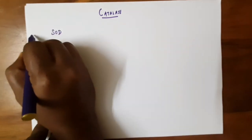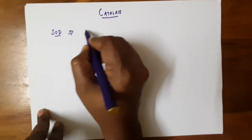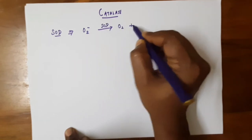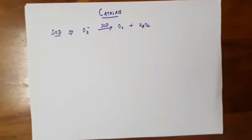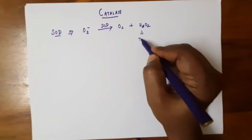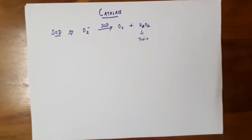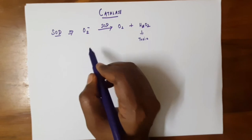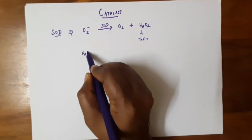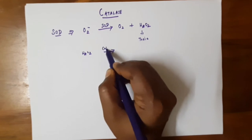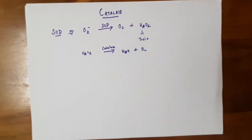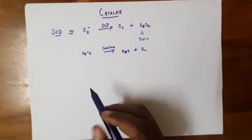During the conversion of the oxygen radical to molecular oxygen, a byproduct called hydrogen peroxide is generated. This hydrogen peroxide is again very toxic to the cell, leading to cell damage and collapse of the DNA structure. This hydrogen peroxide is then decomposed by another enzyme called catalase.